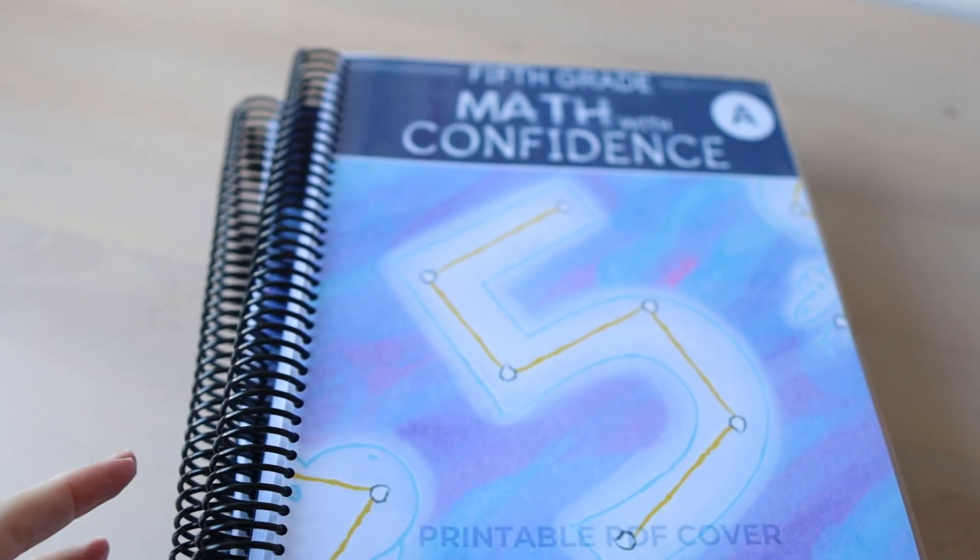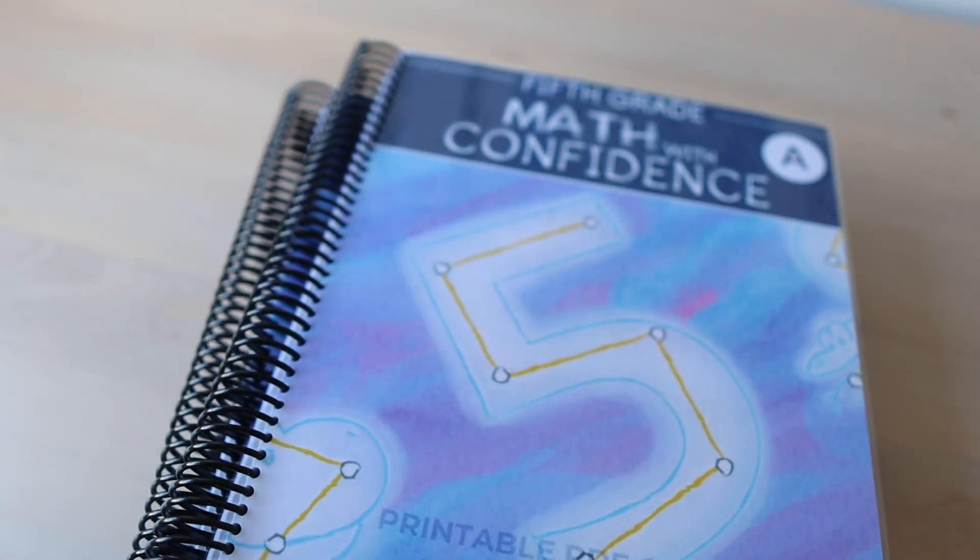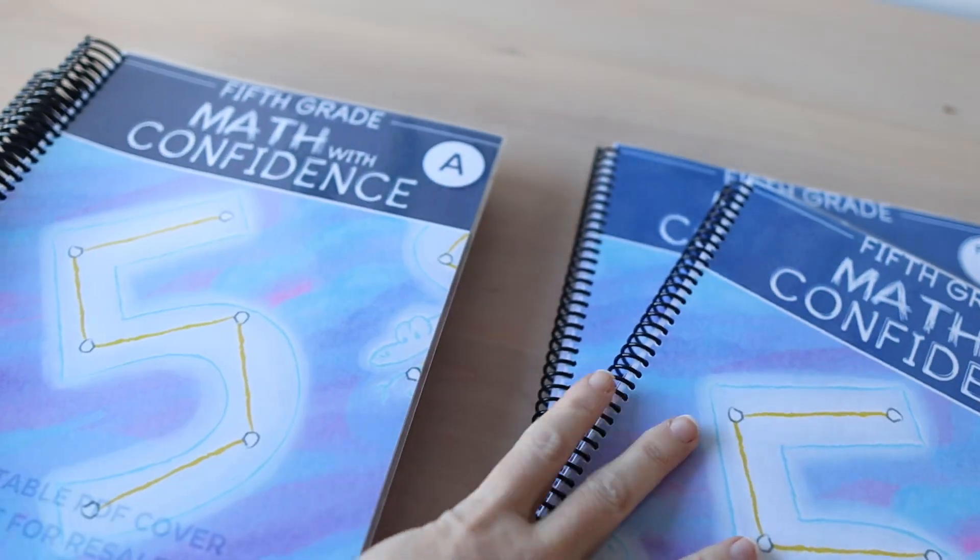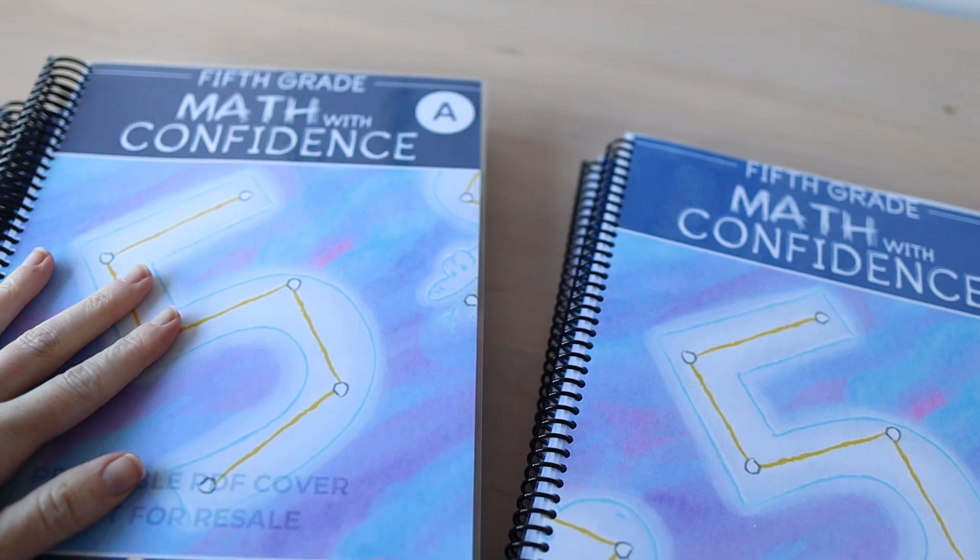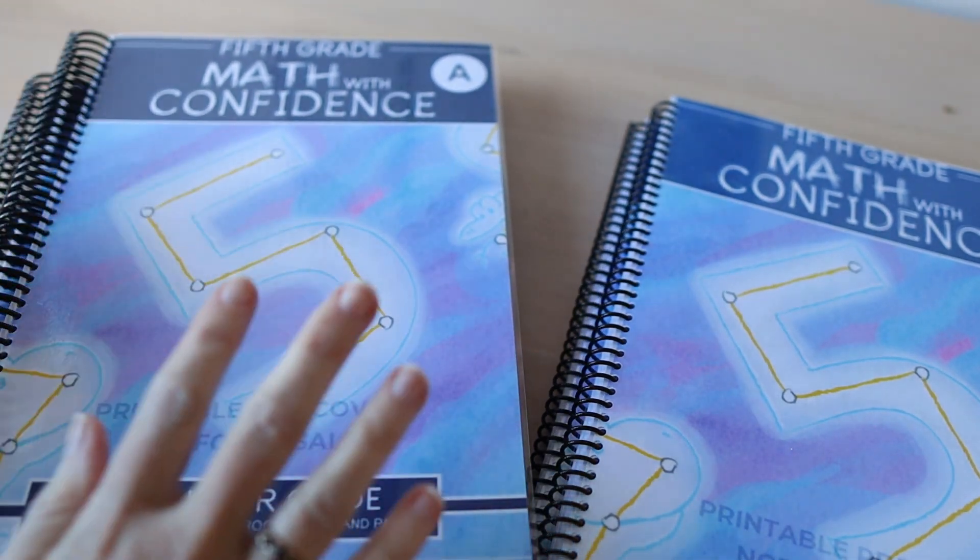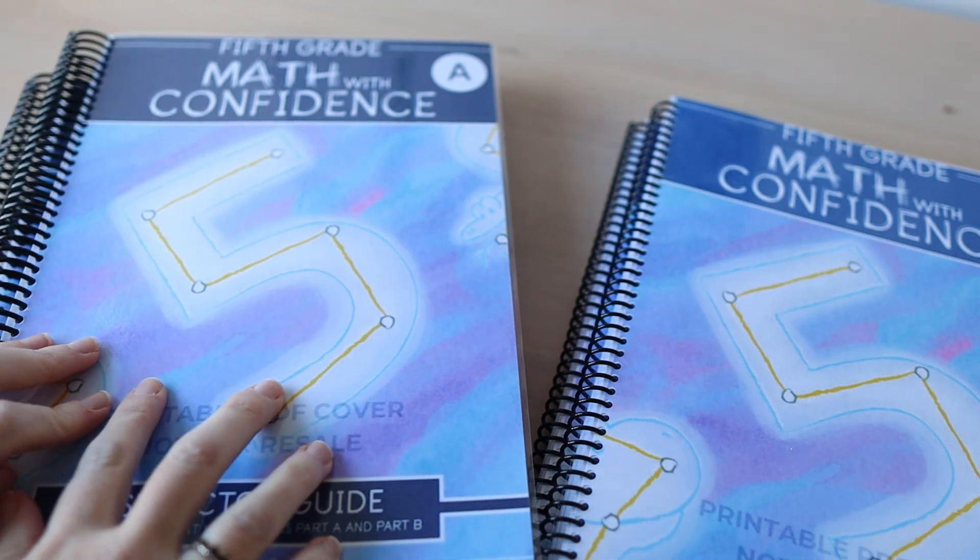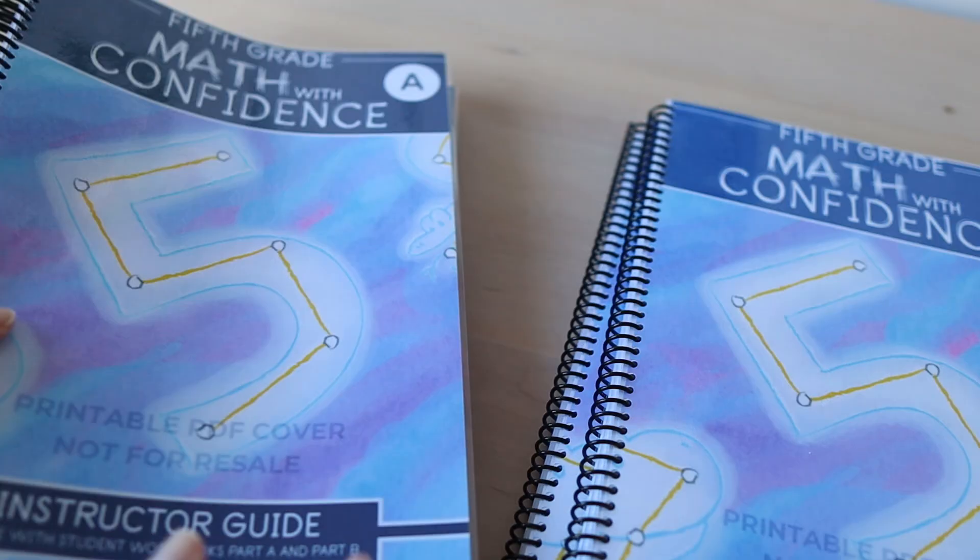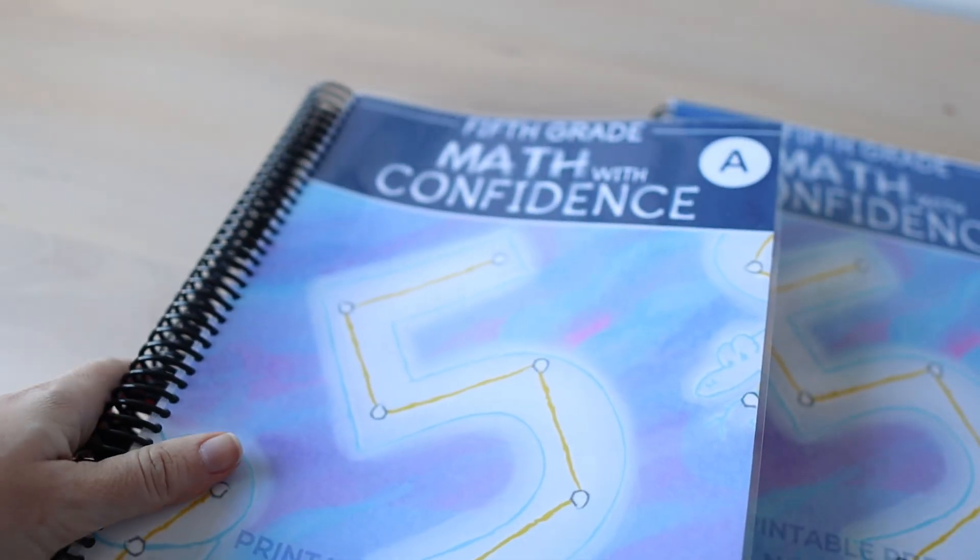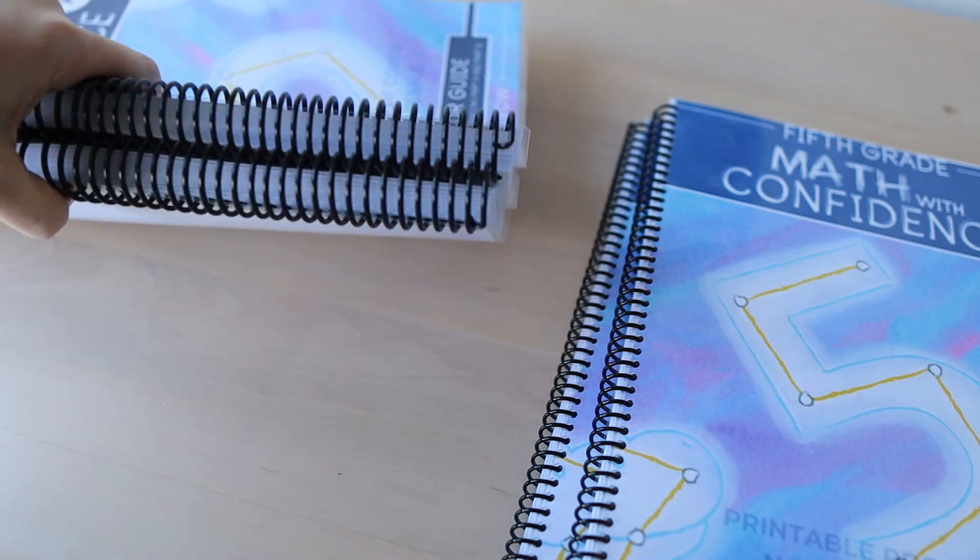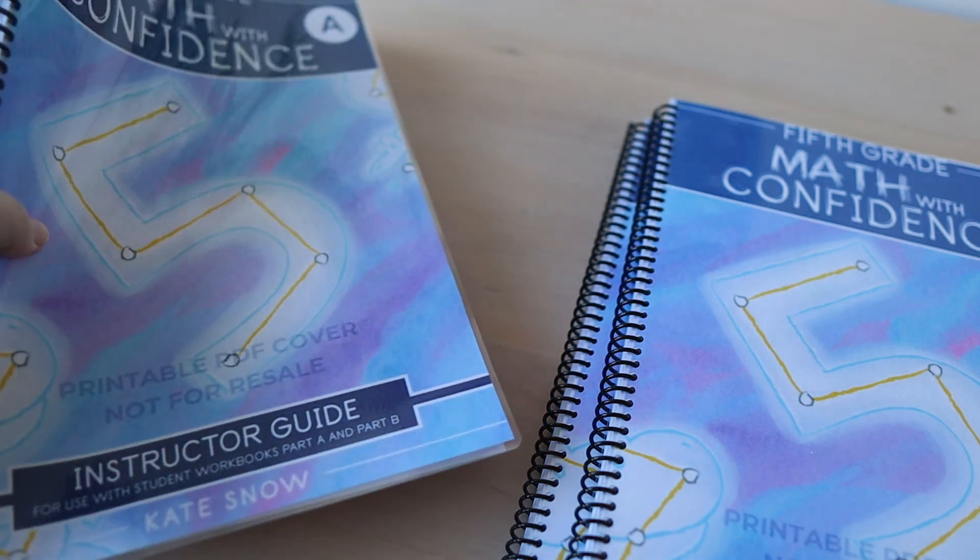Math with Confidence five. Here are the components for this curriculum. I have the PDF version here that is white spiral bound. I always get questions, where did you get it spiral bound? It's because I print it at home myself. It is a bit of printing. This is the instructor's guide portion and as you can see that's quite a lot of paper. It's almost like half a ream of paper.